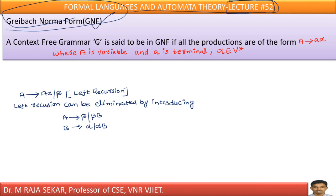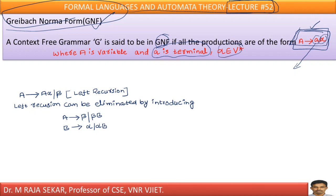A context-free grammar G is said to be in GNF if all the productions are of the form A → a α, where A is a non-terminal, 'a' is a terminal symbol, and α belongs to V* — meaning there may be zero or more variables. If every production is of this form, the grammar is known as Greibach Normal Form.